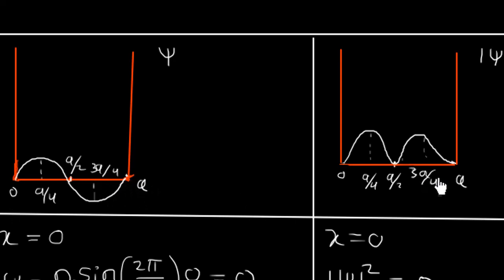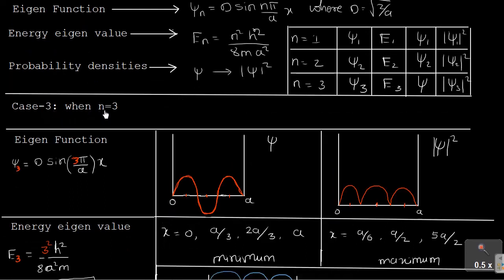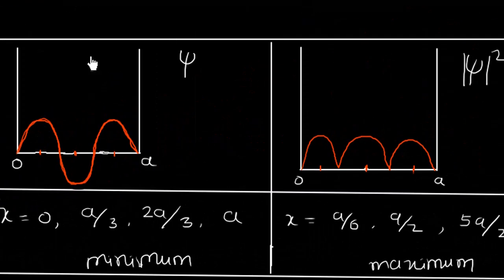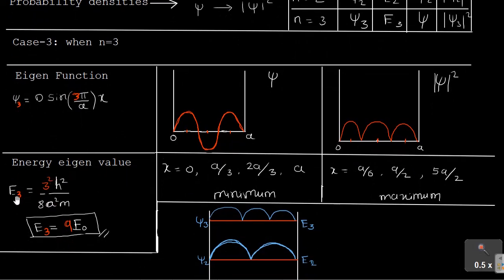At x = a, both ψ and |ψ|² are zero. That completes case two. Now for case three, when n = 3: the eigenfunction is ψ₃ = D·sin(3π/a · x). The energy eigenvalue is E₃ = 3²h²/(8ma²) = 9h²/(8ma²) = 9E₀.